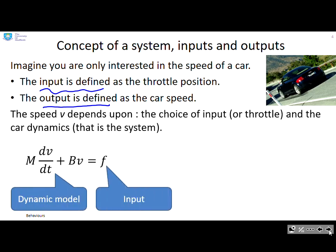The speed v depends upon the choice of input or throttle position and the car dynamics. So what can you see? We have a model for the car. Within that model, we have an input F, and we also have a signal for the speed V.